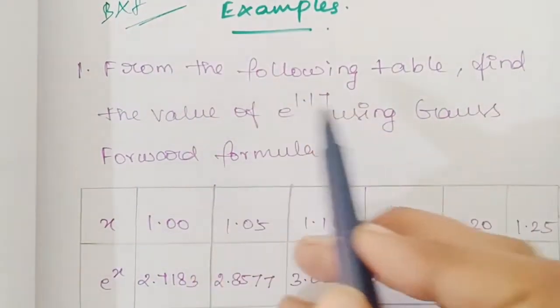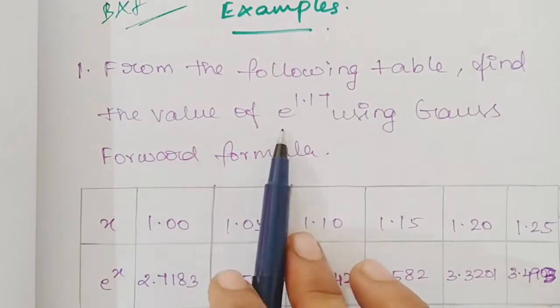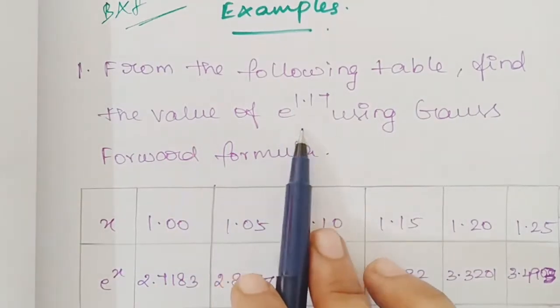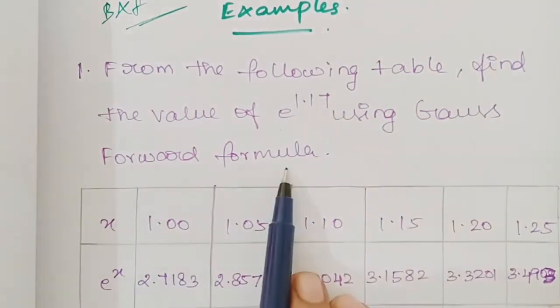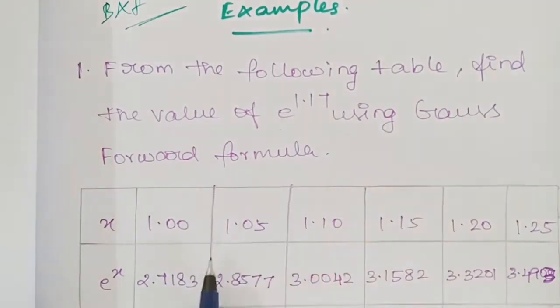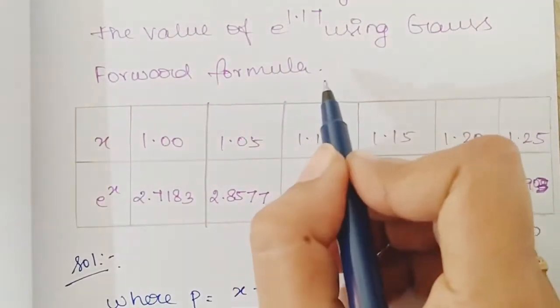First problem: for the following table, find the value of e to the power 1.17 using Gauss Forward formula.